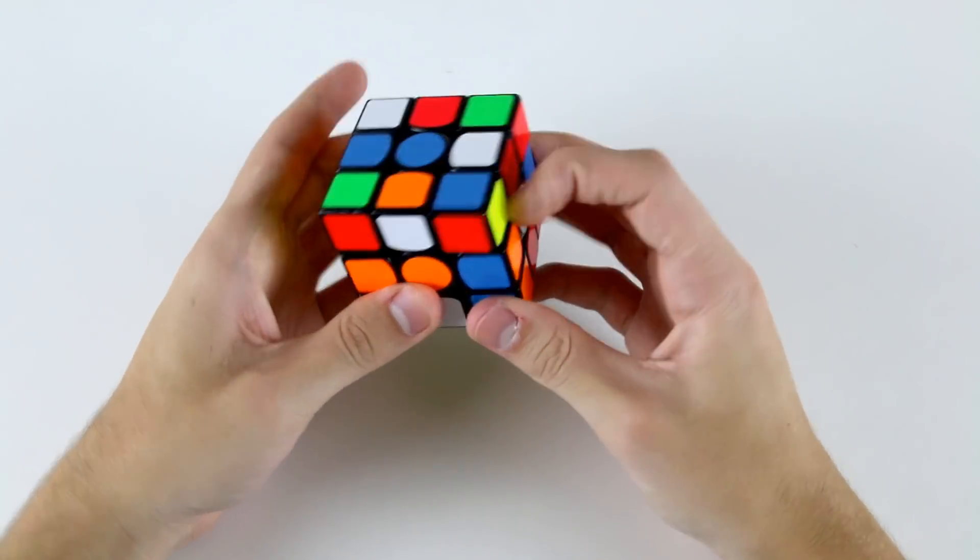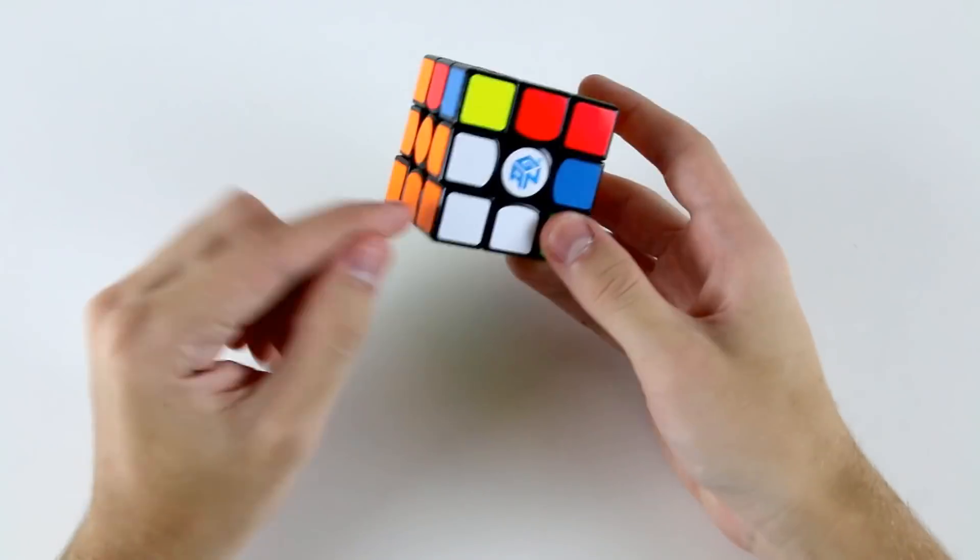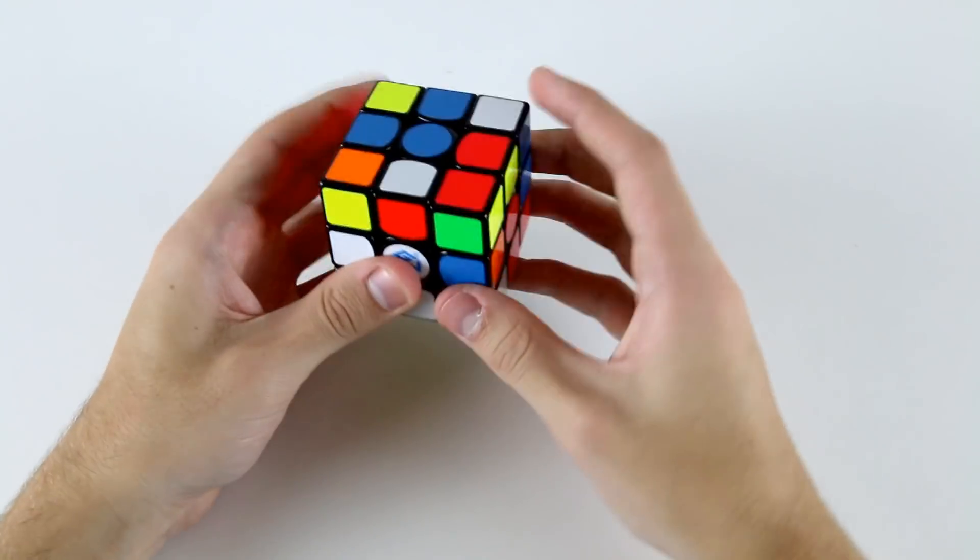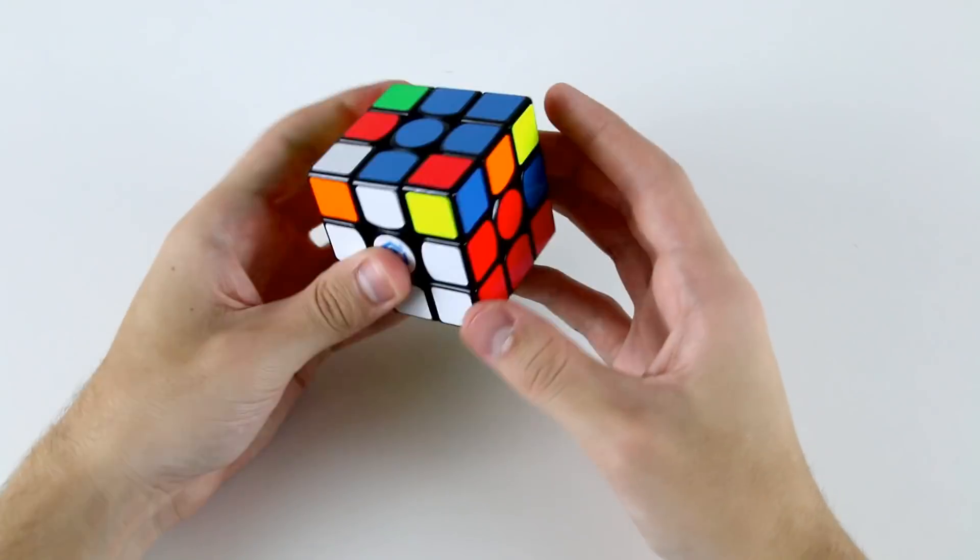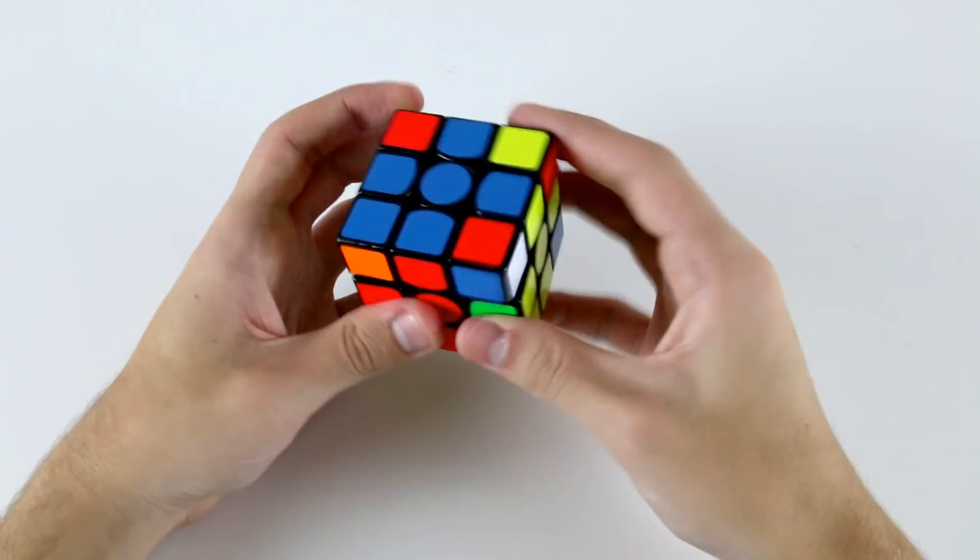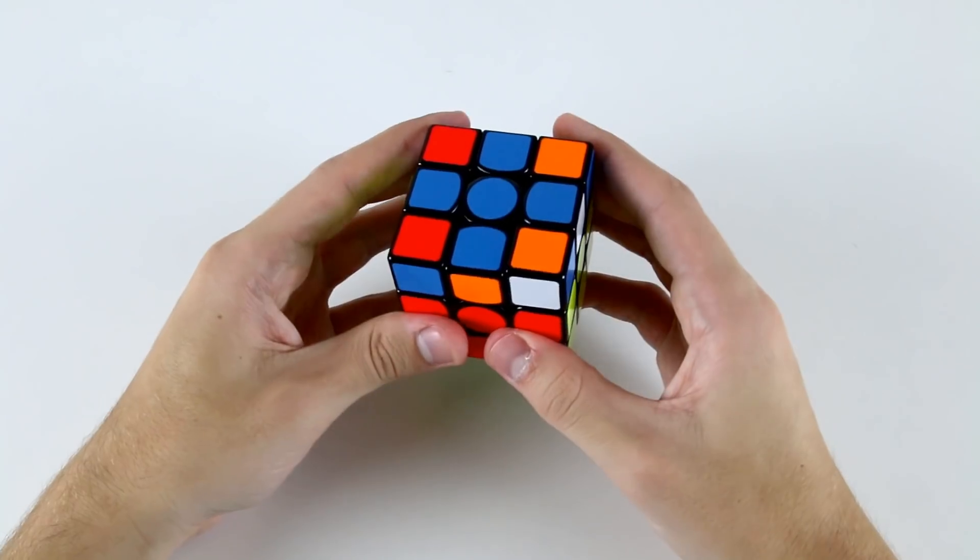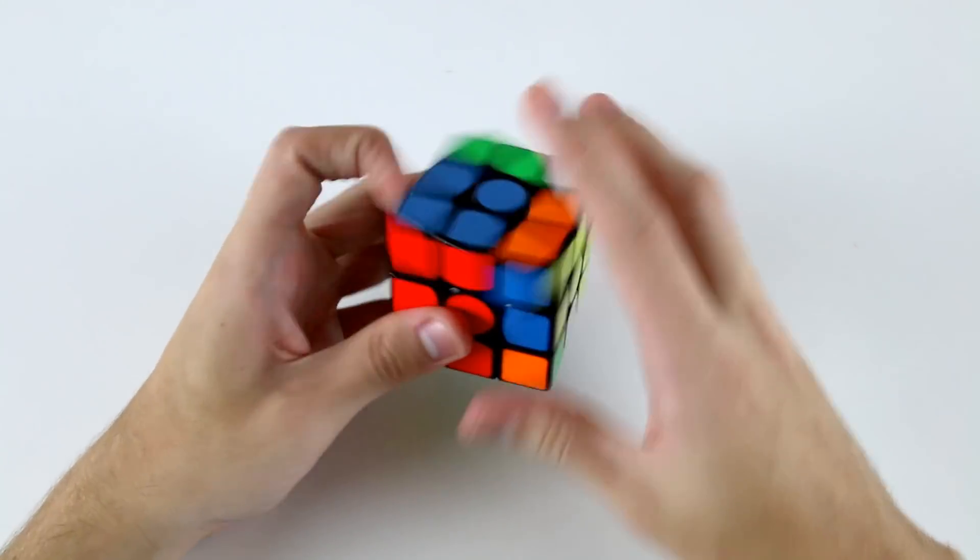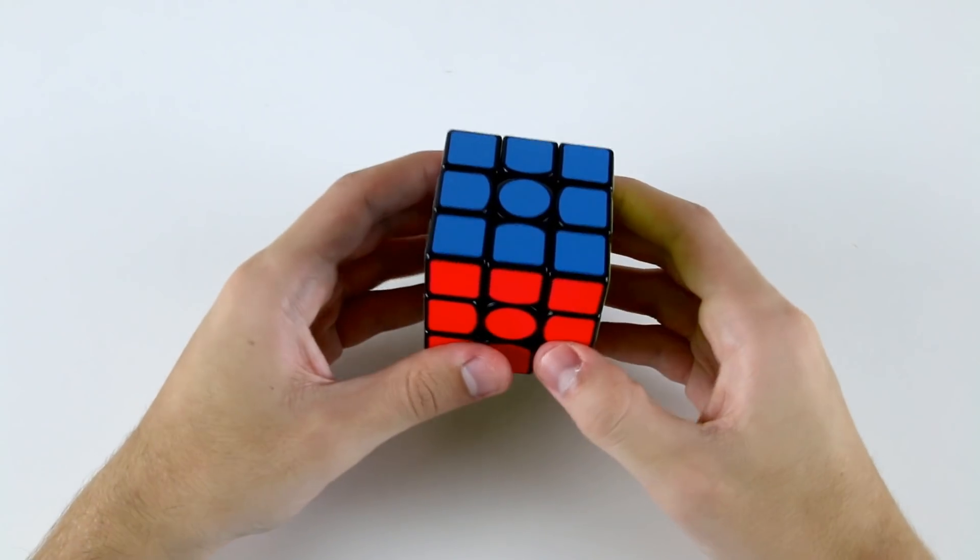D' and insert that using keyhole. Then I'll do these two like that, and then rotate and do that as my last F2L pair. Now I can do CLL and then EPLL.